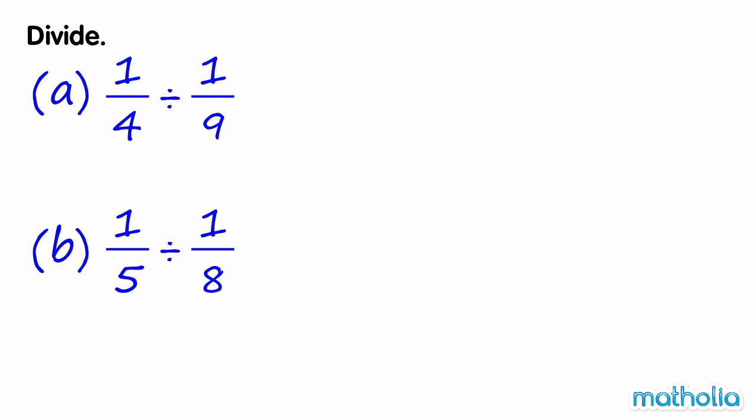One ninth is a unit fraction, so we can write one quarter divided by one ninth is equal to one quarter times nine. Nine quarters is an improper fraction and can be expressed as the mixed number two and one quarter. So one quarter divided by one ninth equals two and one quarter.